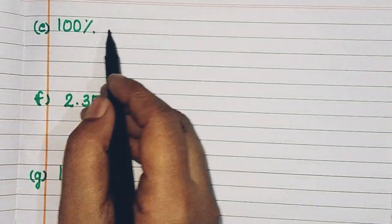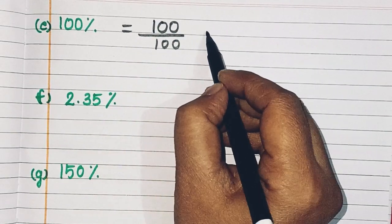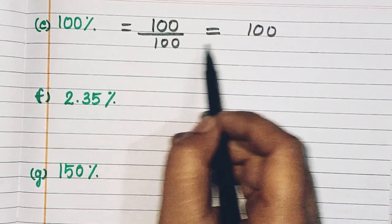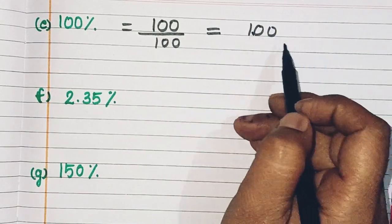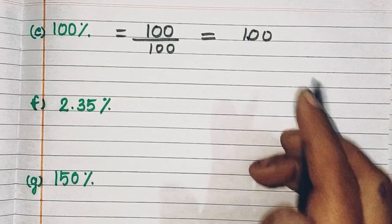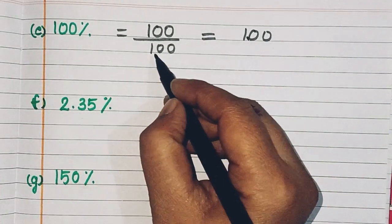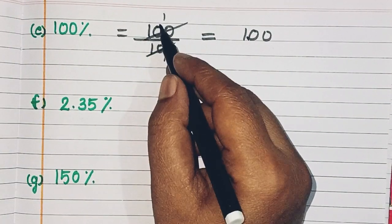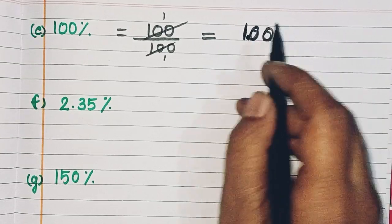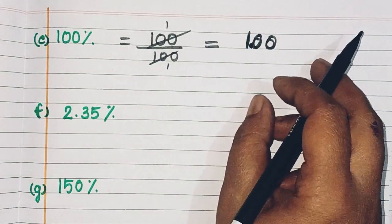Next one is 100%. So 100 upon 100. If you see the format — 1, 2 — and the point gives us 1.00. If you write it as 1.00, it is the same as 1. You can write the answer directly as 1. That is also correct.